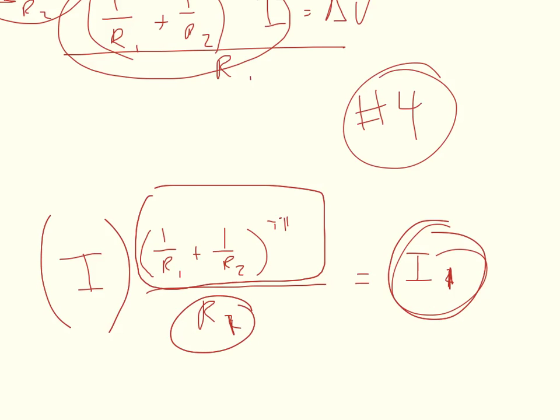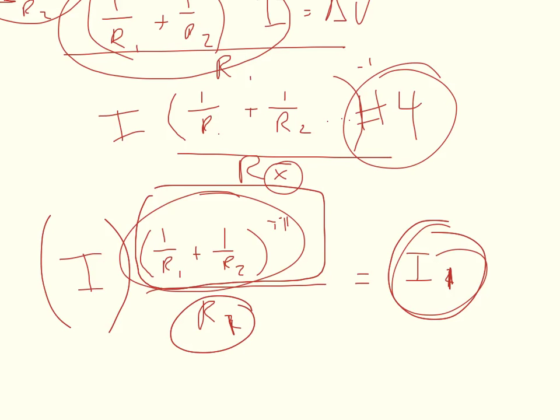And this is actually something that you could have used for problem number 4, but explaining it with number 4 would have taken more since I would have had to drawn out, I would have had to explain a lot more. But this paradigm is the total current times I over R1 plus 1 over R2 to the negative 1 power divided by R whichever number you are looking for.